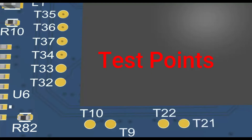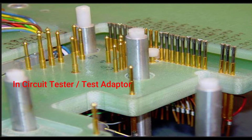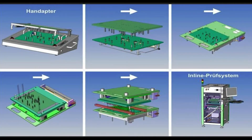Today I'm going to talk about test points, which we normally need on our PCB for testing the supply voltage — whether it's available at every component or not. In case you don't have any kind of connector during PCB production, PCB manufacturers use an in-circuit tester. With this tester they can come directly to your test points, give the supply voltage through a test adapter, and check the functionality of the circuit.